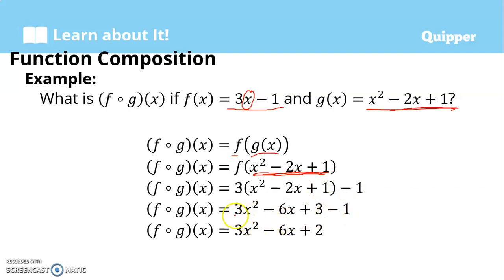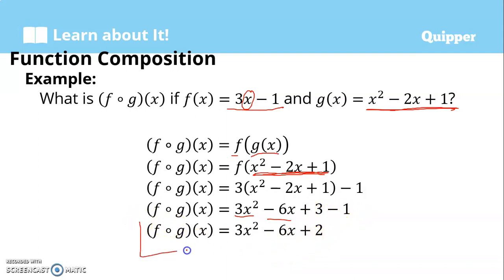Simplifying, we combine like terms. The x squared term stands alone: 3x squared. The 6x term also stands alone: minus 6x. Then we have two constant terms: 3 minus 1, which is positive 2. So therefore, f composed of g of x is 3x squared minus 6x plus 2.